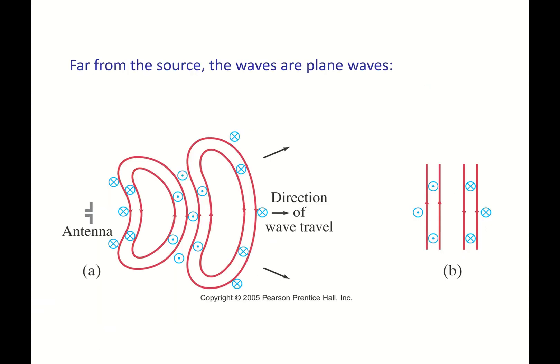As we go further from the source the curves in the electric field flatten out. Far enough away, as in figure B, the electric field lines are straight up and down and the magnetic field lines are straight in and out — we call these plane waves because they're shaped like a plane, like a sheet of paper. The electric field and the magnetic field are always perpendicular to each other and also perpendicular to the direction the wave is traveling.